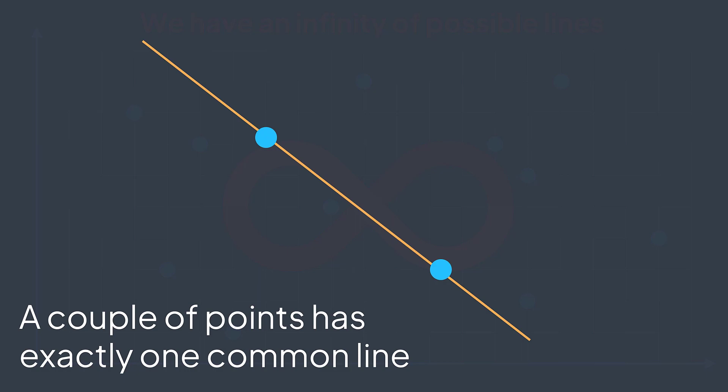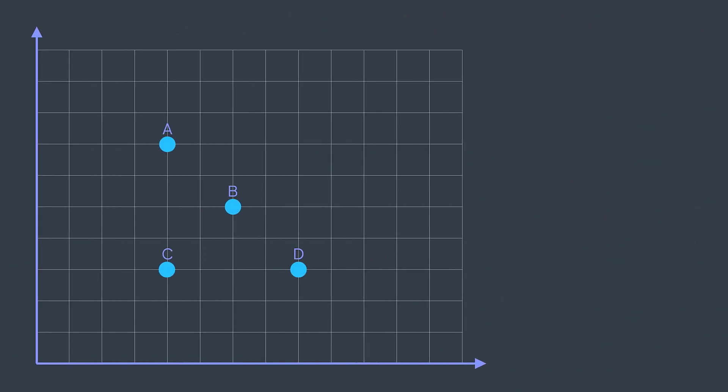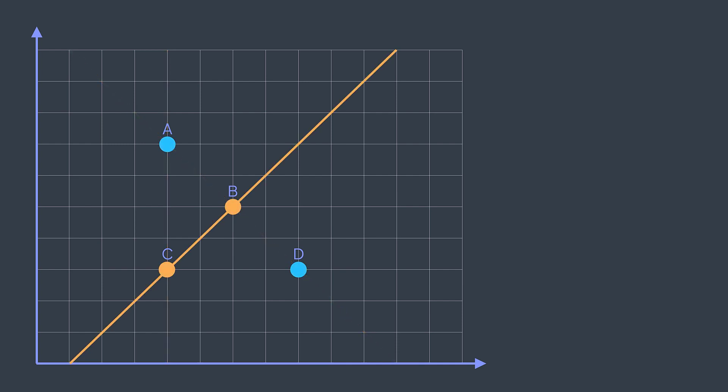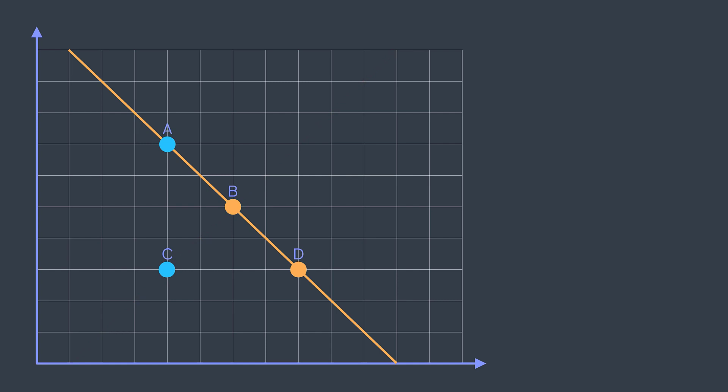How to find the lines we're interested in? We just traverse each couple of points and see what unique line they have in common. For example, for the couple AB we have this line. For the couple AC we have this line. For the couple AD we have this line. For BC this one. For BD this one. And for CD this one.